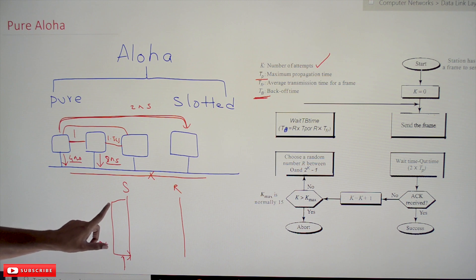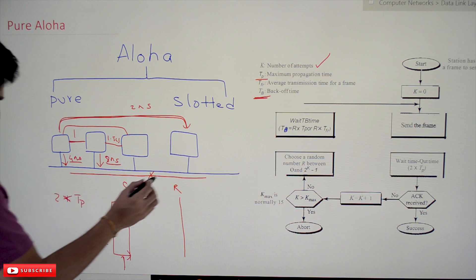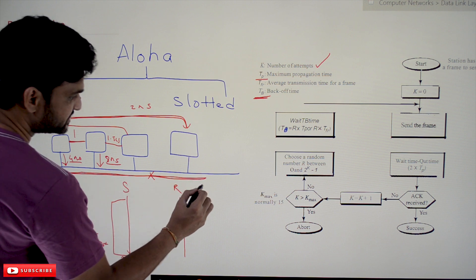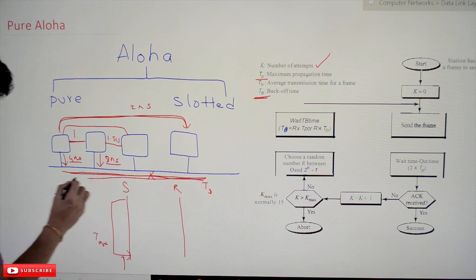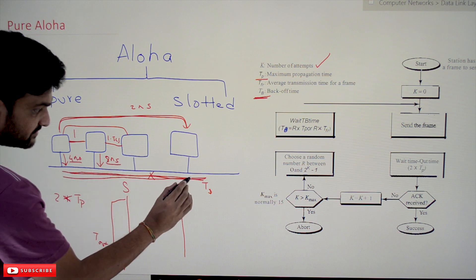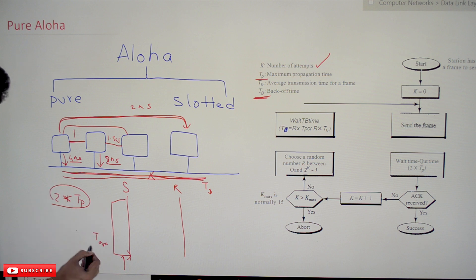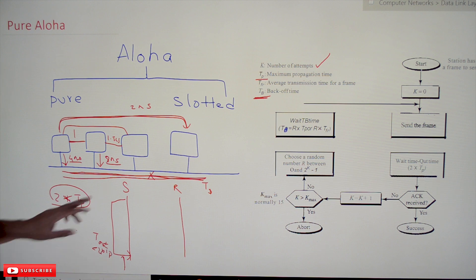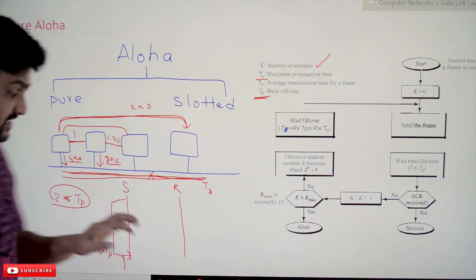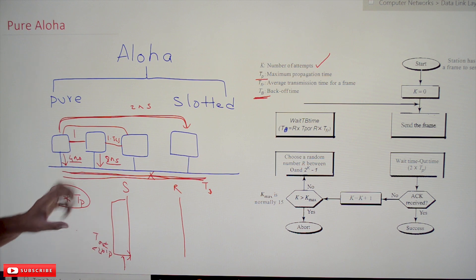The timeout time is decided as 2 × tp, which is also called the round trip time. It is the time for the farthest systems to transmit data and for the acknowledgement to return back. So the timeout time is always 2 × tp. If the propagation time is 2 nanoseconds, then the timeout time is 4 nanoseconds. That is the amount of time a system will wait before retransmission.